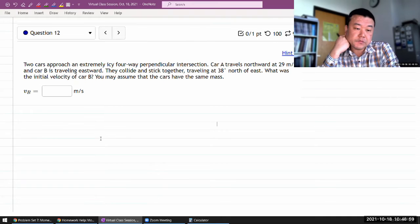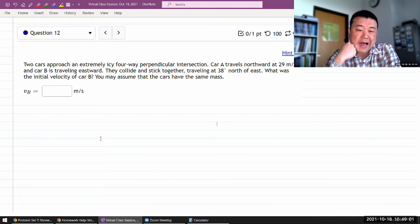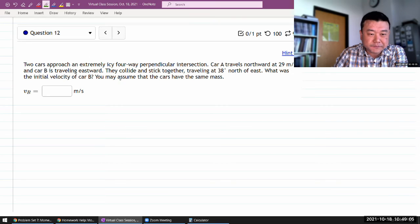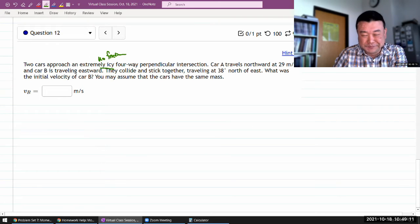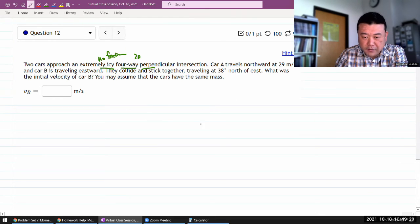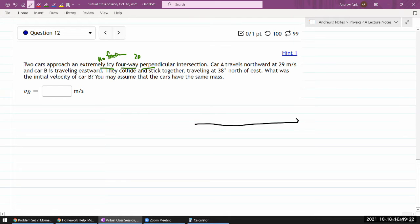Two cars approach an intersection on a frictionless four-way, so this is the 2D part. It's perpendicular intersection. Let me start drawing this picture here. I'm going to draw my axis so that this is my plus x, which is east, and my plus y is north.